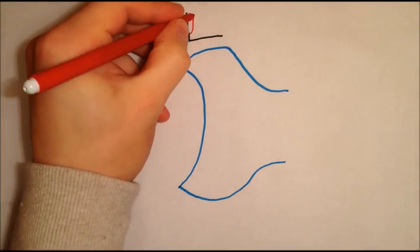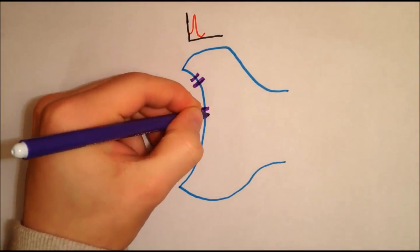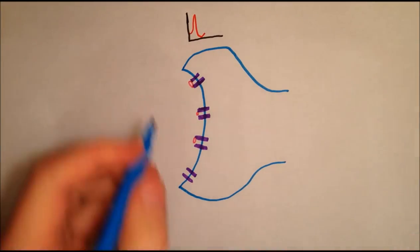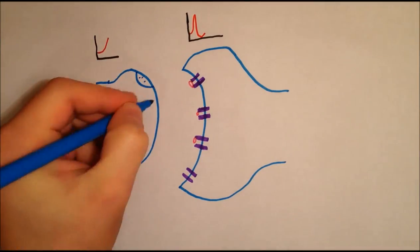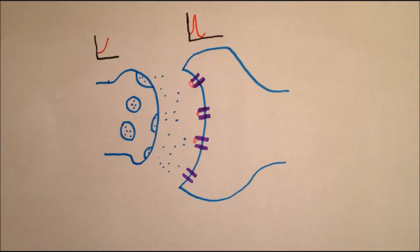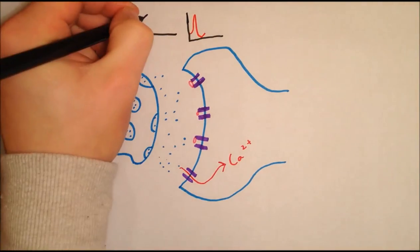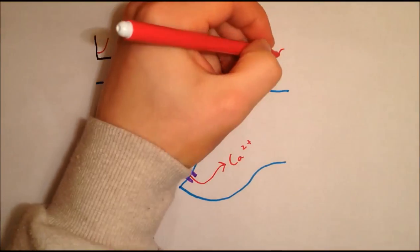If the postsynaptic neuron fires first, it becomes depolarized. As it is repolarizing, the presynaptic neuron fires and releases glutamate. When the glutamate reaches the postsynaptic cell, it finds it repolarizing and at a lower voltage. This means there are fewer NMDA receptors available to bind to. This leads to a more moderate calcium influx.